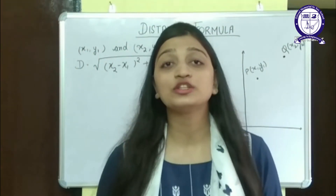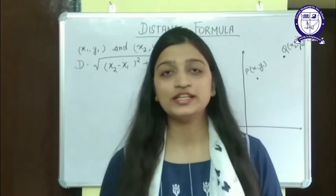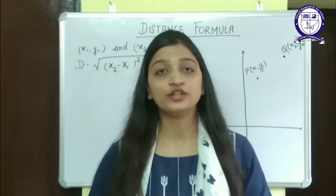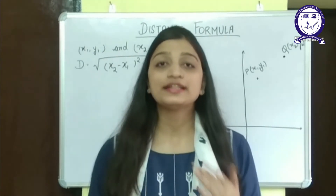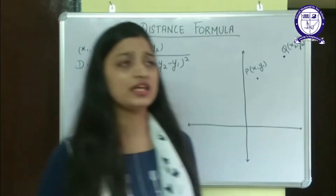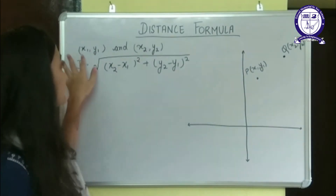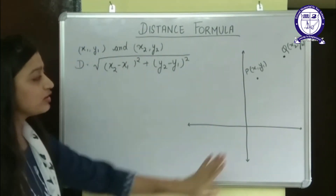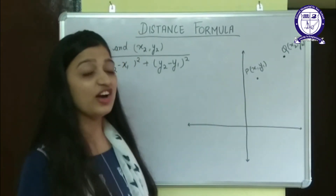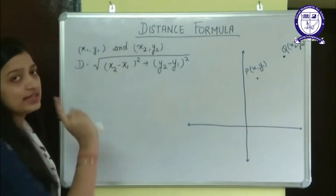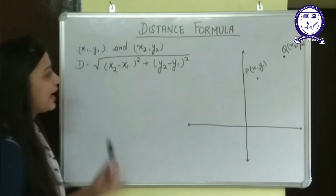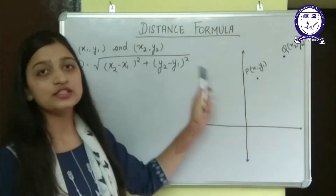Now we are going to discuss the concept of distance formula in coordinate geometry. Till now we have learnt how to plot any point on the graph. But now we are going to find the distance between any two points given to us. Suppose there are two points: (x1, y1) and (x2, y2). The distance formula is given by d equals under root of (x2 minus x1) squared plus (y2 minus y1) squared.